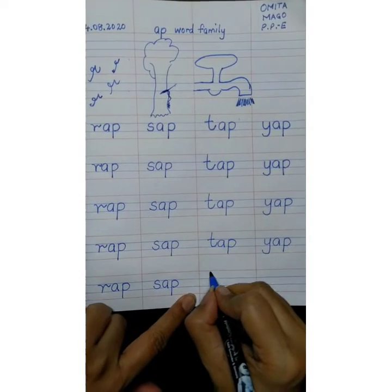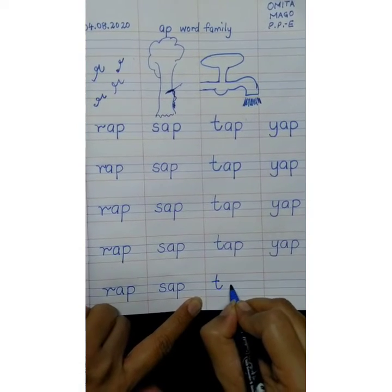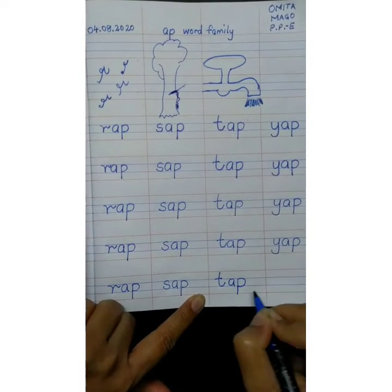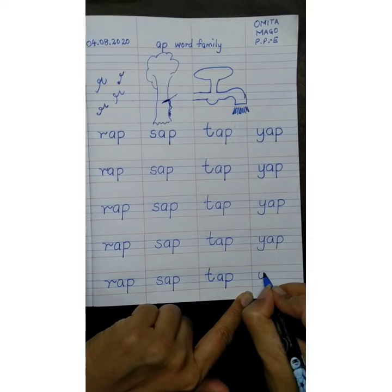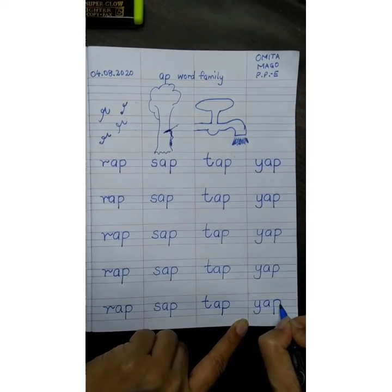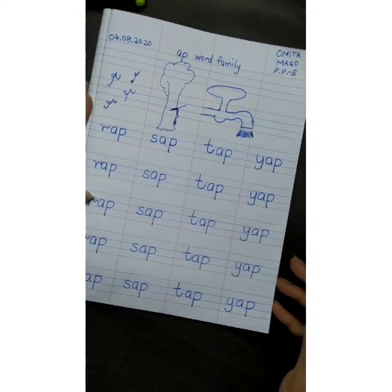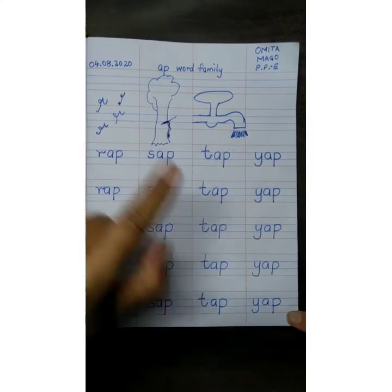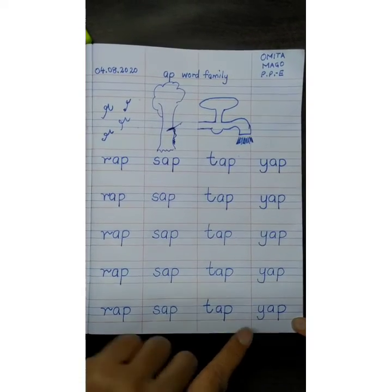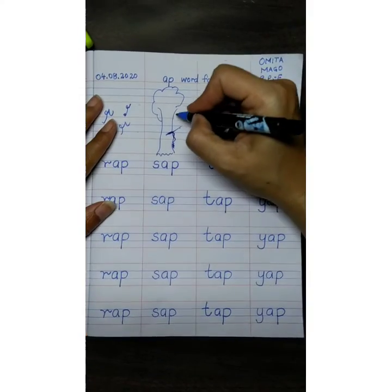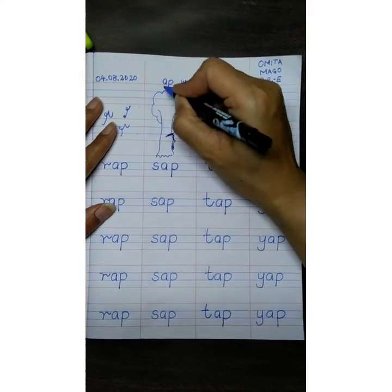When you write the word, you will read it and then write it. You will say it as you write. Then only you will be able to do your dictation very well. So, this is the way you will write the Ap words and learn them for dictation and read them and learn them. And the drawings also you will color them.